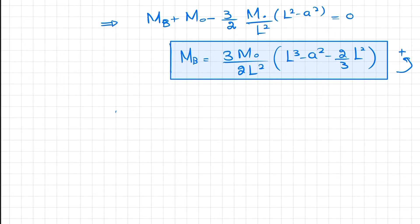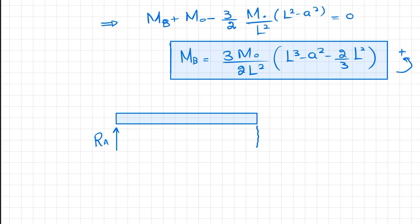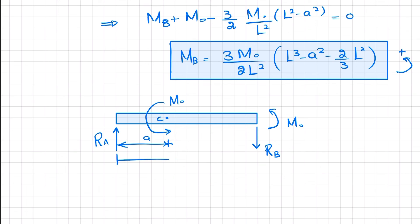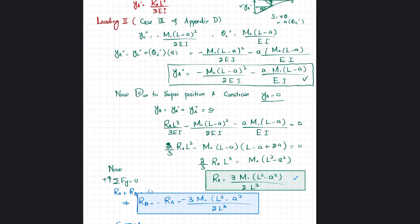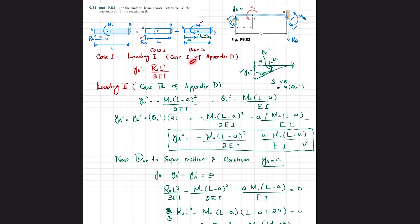Drawing the final beam: RA is upward at A, RB is downward at B, and the reaction moment MB at B is counterclockwise. At point C there is a counterclockwise external moment M₀, with distance a from A to C and total length L. We have found all three unknowns: RA, RB, and the reaction moment MB. I hope you enjoyed this video — if you have any questions, ask in the comments. Subscribe to the channel and keep watching. Thank you.